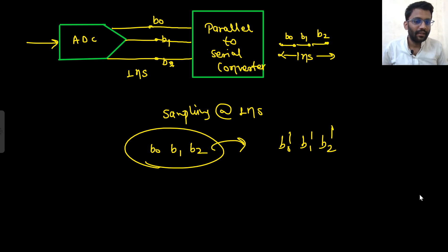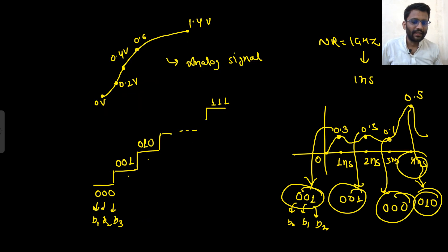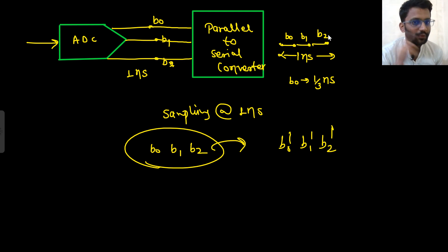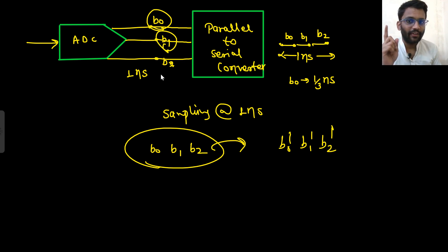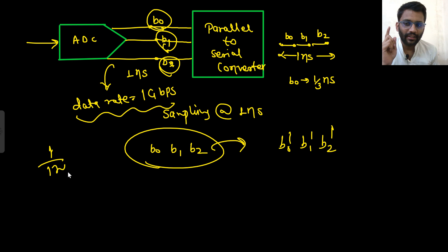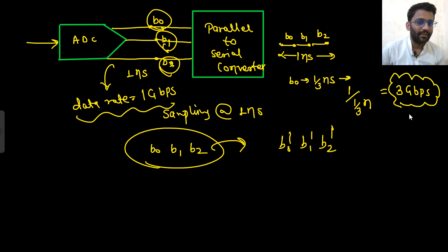They ask for the data rate in bits per second. In the parallel case, one bit is present for 1 nanosecond, giving a rate of 1 Gbps. But in the serial case, each bit occupies only 1/3 nanosecond, so the data rate is 1 ÷ (1/3 ns) = 3 Gbps. Therefore the correct answer is 3 gigabits per second.